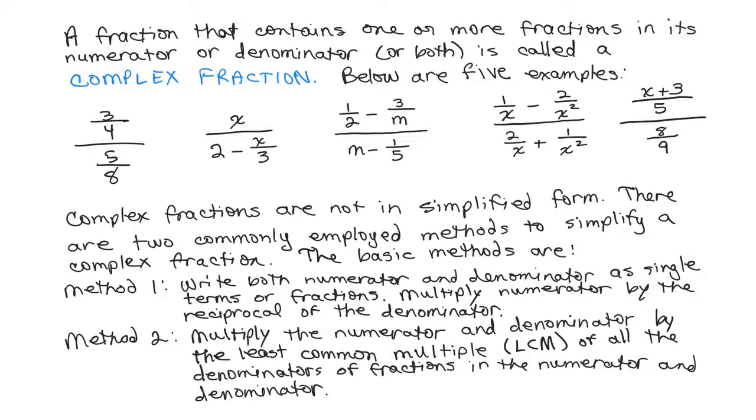you don't need to have it in the form as the very first example. Instead, to simplify the complex fraction, multiply the numerator and denominator by the least common multiple of all the denominators of all the fractions in the numerator and the denominator.